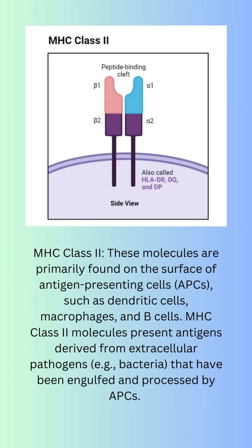MHC class 2 — these molecules are primarily found on the surface of antigen-presenting cells, APCs, such as dendritic cells, macrophages, and B cells. MHC class 2 molecules present antigens derived from extracellular pathogens, e.g. bacteria, that have been engulfed and processed by APCs.